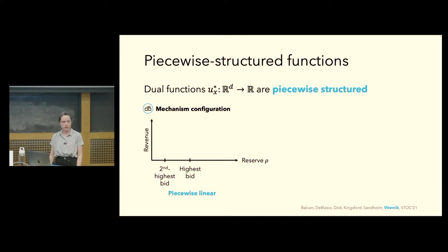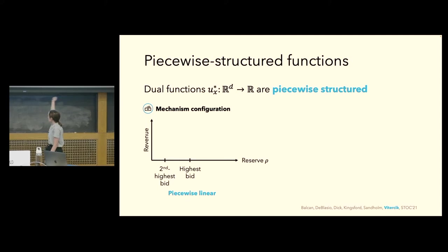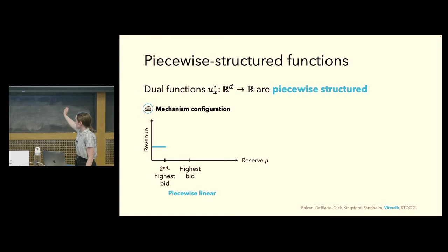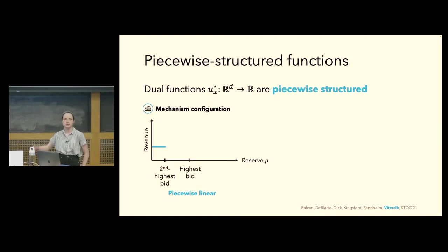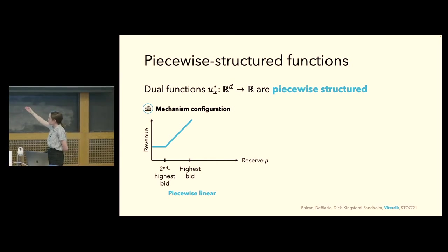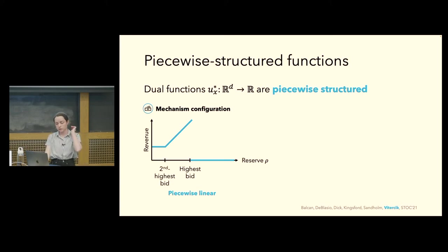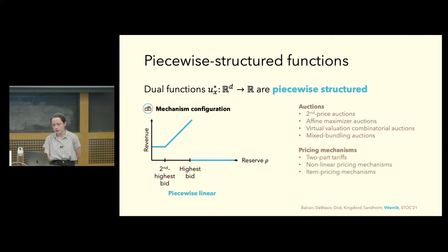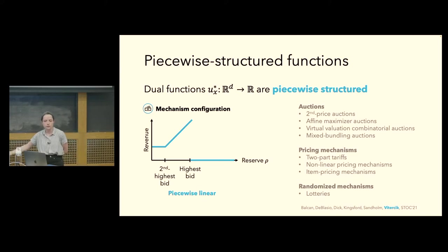In integer programming, these dual functions — tree size as a function of parameters — are piecewise constant. We also see piecewise structure elsewhere: in mechanism configuration, revenue is a piecewise linear function of the parameters. This is easiest to see with a second price auction with tunable reserve rho: when the reserve is below the second highest bid, revenue is constant; when between the second and highest bid, revenue equals rho; when above the highest bid, revenue is zero. We find similar piecewise linear structure across various auction mechanisms, pricing mechanisms, and randomized mechanisms, as well as piecewise inverse quadratic and other structures.